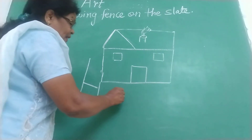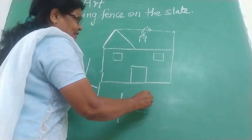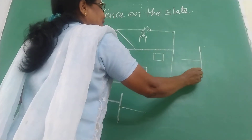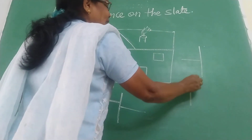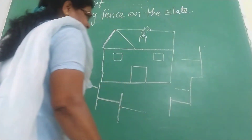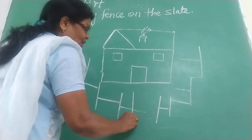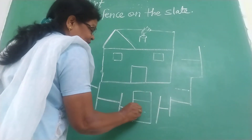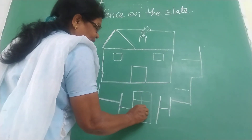Standing line and sleeping lines — standing line, now here also standing line and sleeping line. Standing line and sleeping line. Now here I am going to make a gate. This is the gate, and here that is the lock of the gate.